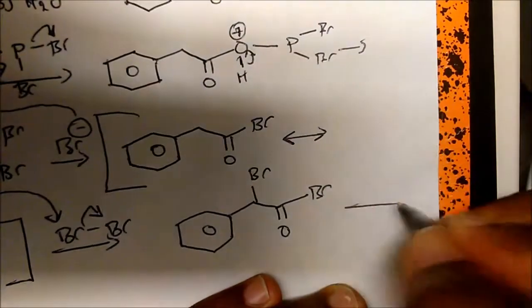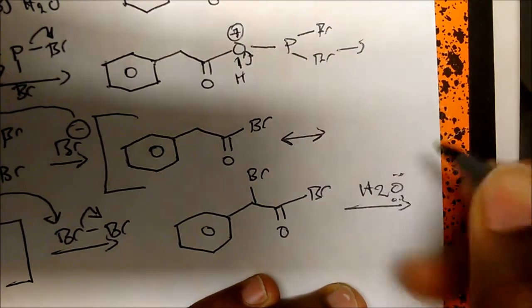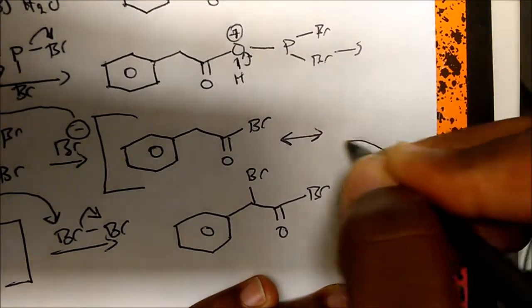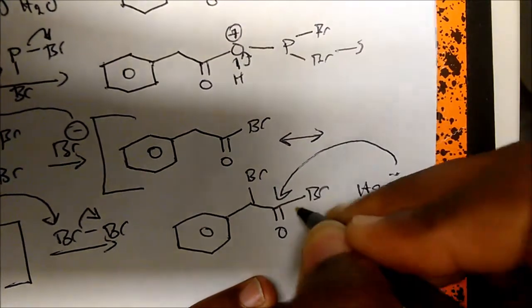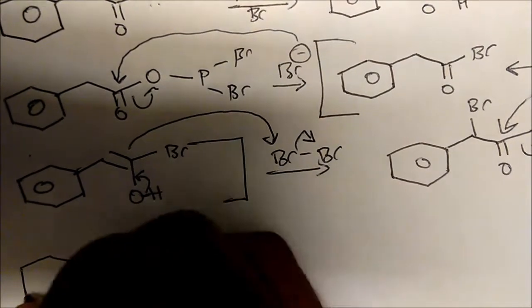Now what will happen next? Well, now water will come in and act as a nucleophile. So water will come in, attack the carbonyl carbon and displace the bromine as a leaving group. And so we come to a structure that looks something like this.